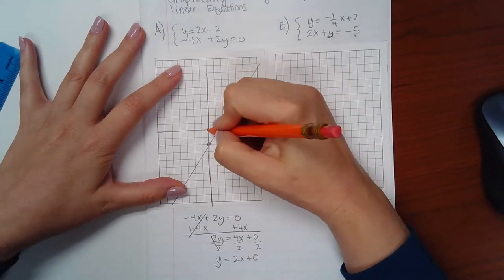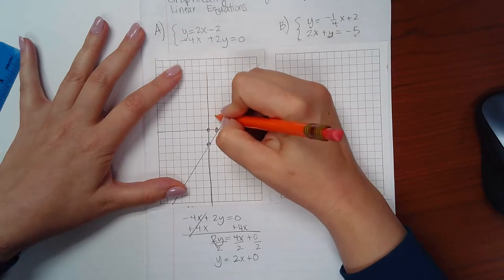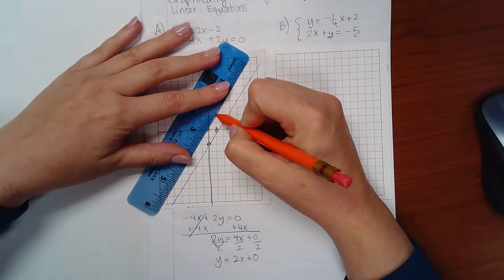Then I have to divide by 2 and I get y equals 2x plus 0. So the y-intercept here is 0. And then I'm going to do the same thing, go up 2 and over 1, and draw that line.